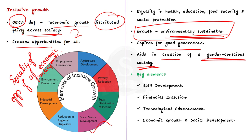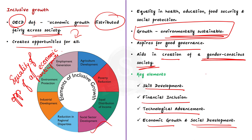Some of the key elements of inclusive growth include skill development, financial inclusion, technological advancement, economic growth, and social development. These are all elements that need to be addressed to achieve inclusive growth. So far we have seen many things about financial inclusiveness and even some inclusiveness regarding climate change mitigation measures. Now let us see about technological advancement in India in the aspect of inclusive growth.